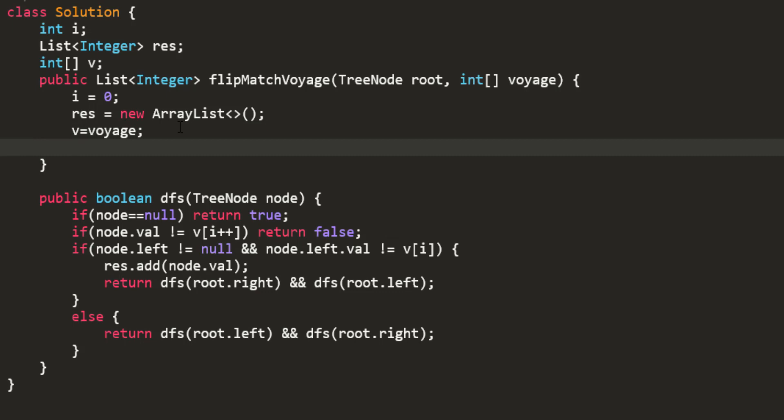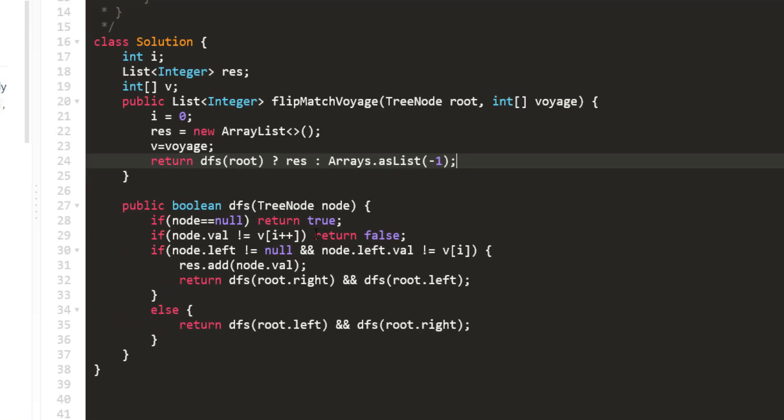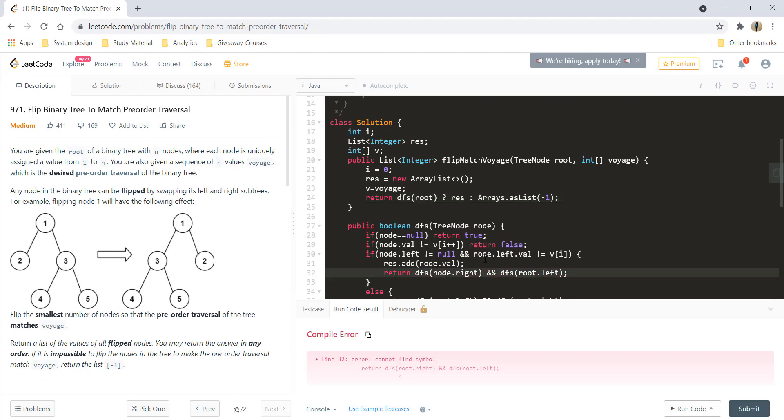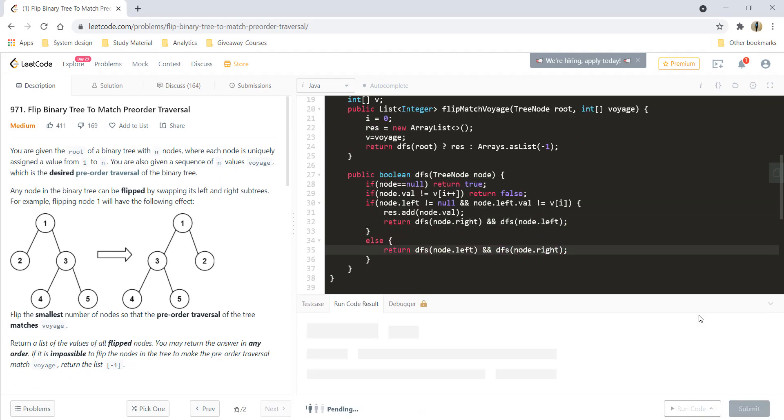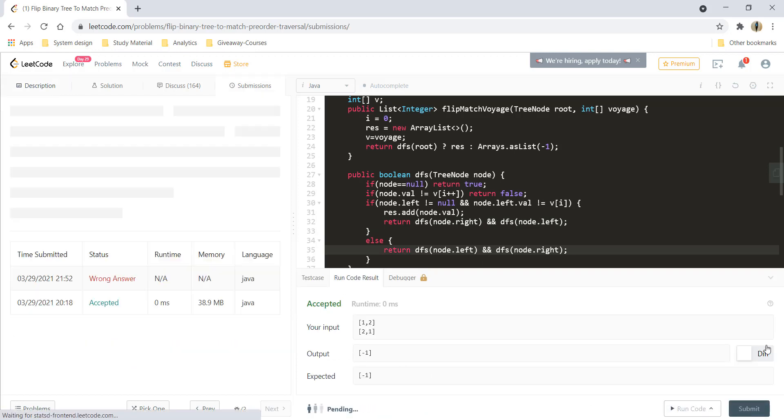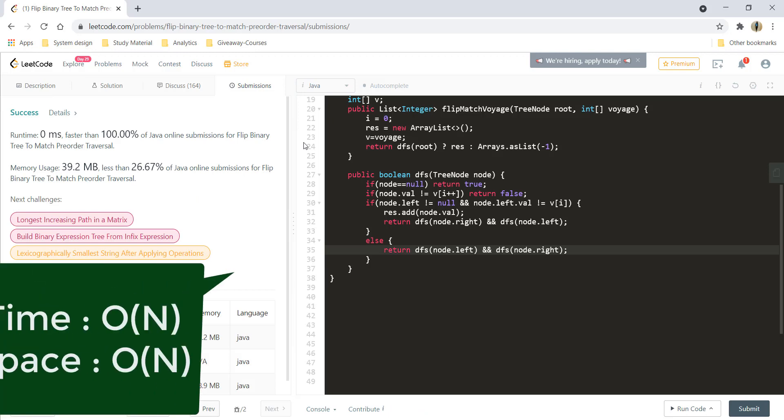In our main method we'll call DFS on root and check whether we are getting a true or a false. If you are getting true we need to return the result as it is, and if it is false we need to return a list with minus one in it. Let's try to run this code. Let's run this again and we are getting a perfect result.